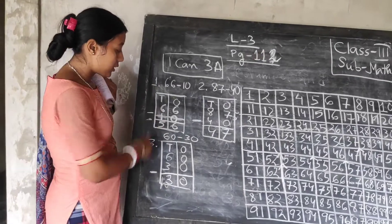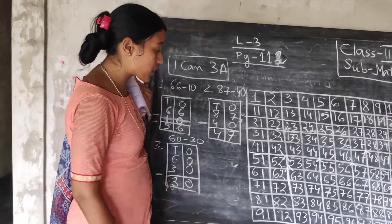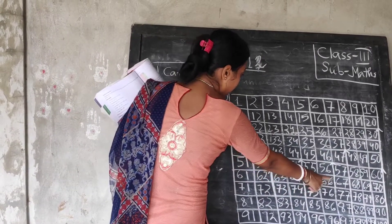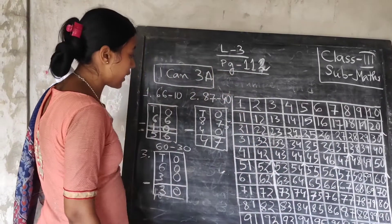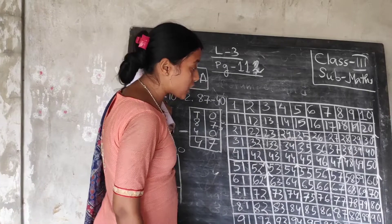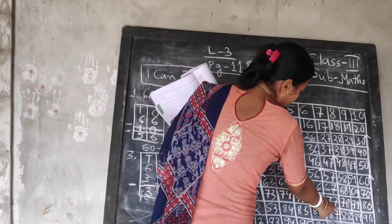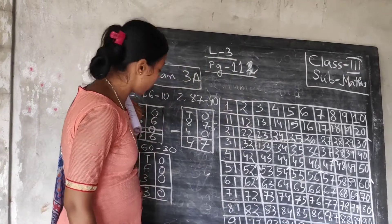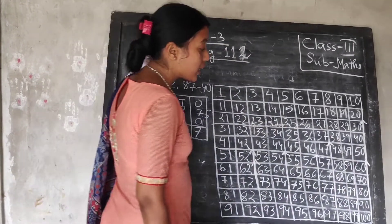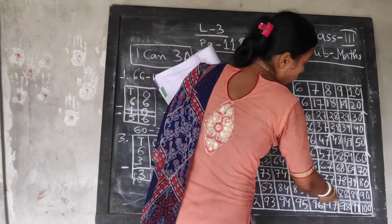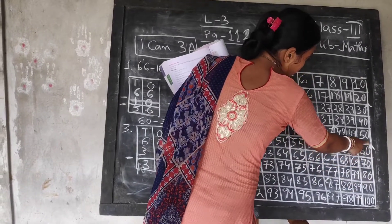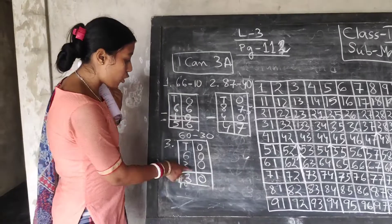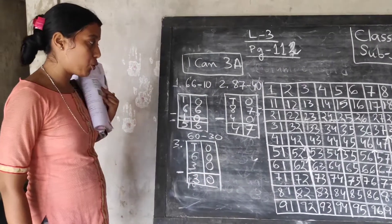Let me tell you what I mean. 10 means you will move 1 box up. So, 66 — 1 box up gives 56. Then, 40 means 4 boxes up. So, 87 — 1, 2, 3, 4 — 4 boxes up means 47. Then, next one is 30 — 3 boxes up. So, 60 — 1, 2, 3 — your answer is 30. All this you do.